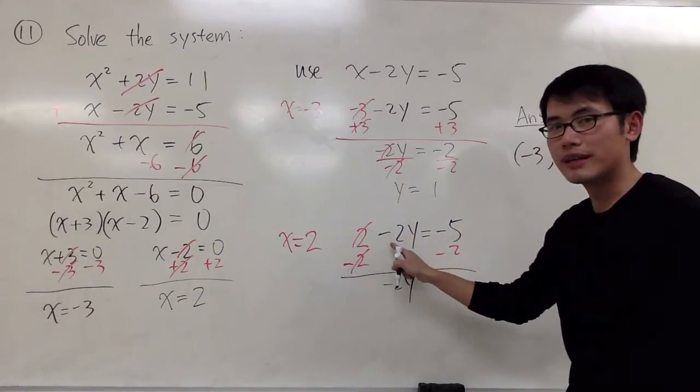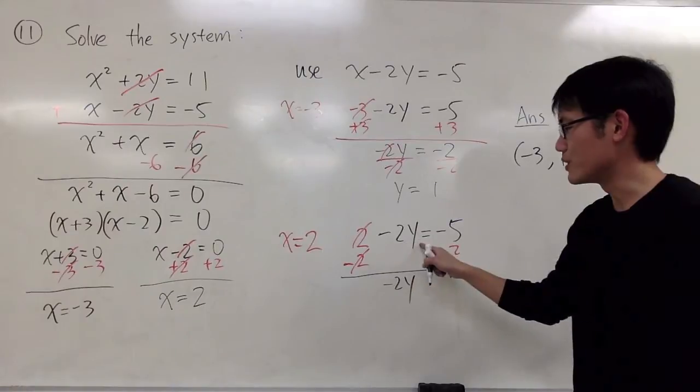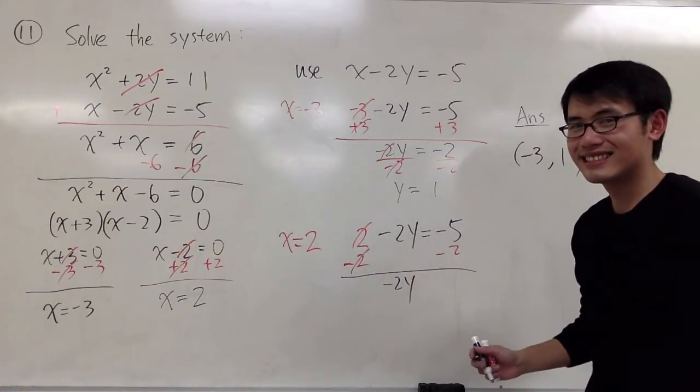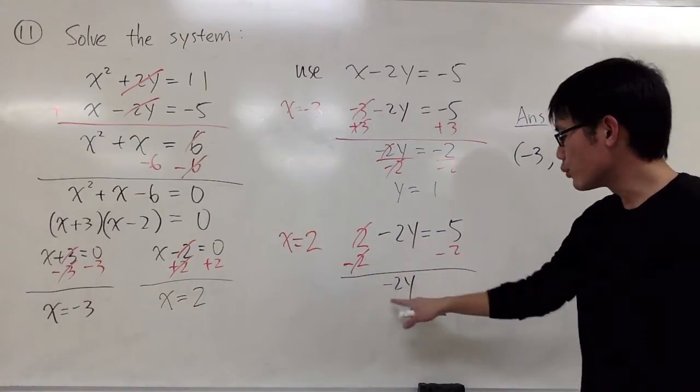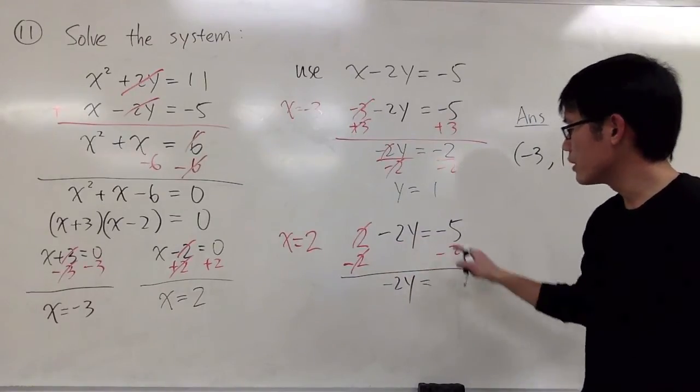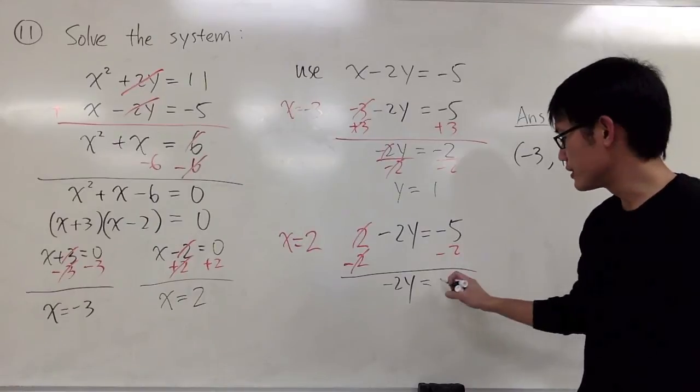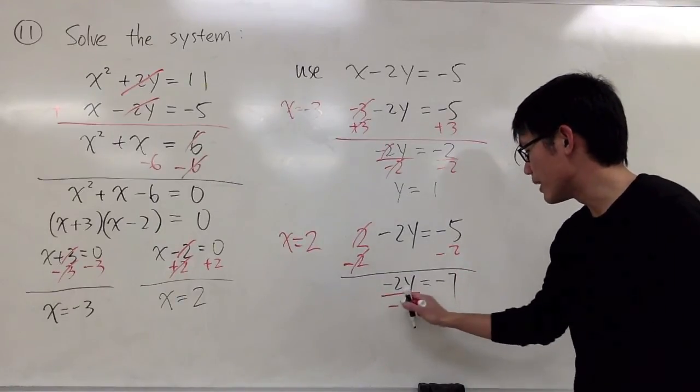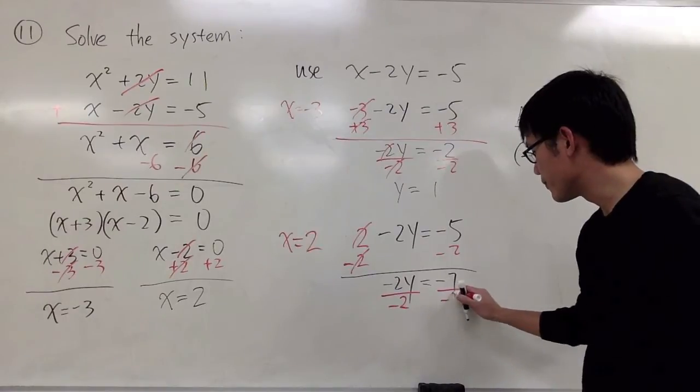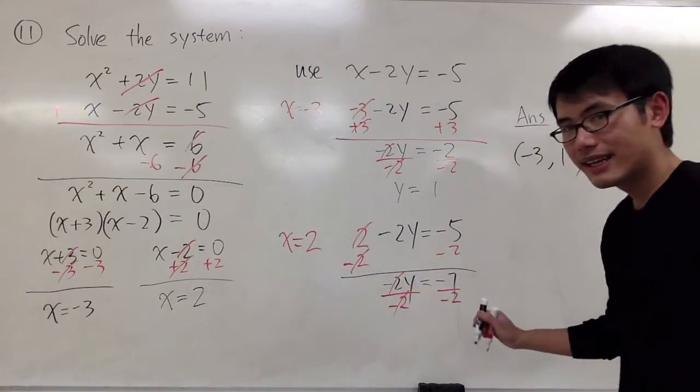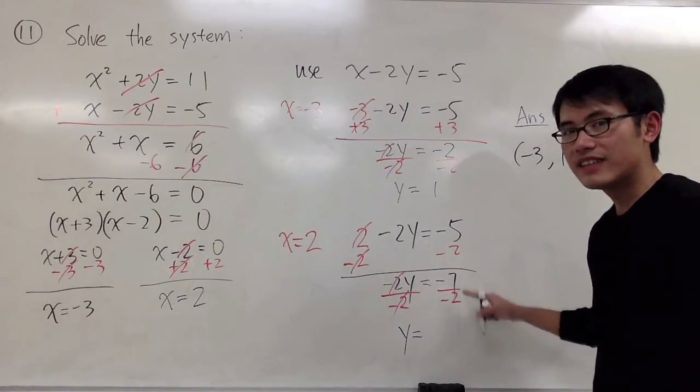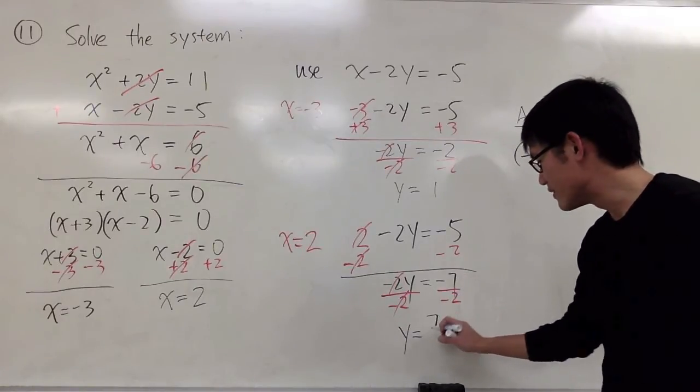By the way, do not do 2 minus 2, right? Because the 2 is with the y. They are different terms. That's why I'll just subtract 2 on both sides. So -2y = -5 - 2, which is -7. And here we are just going to divide both sides by negative 2. And we will get y = -7 divided by -2 is positive 7 over 2.